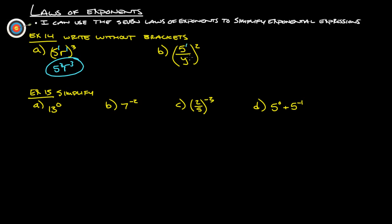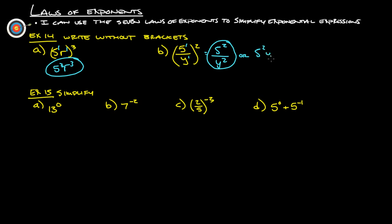Same thing here, that's a 1 and that's a 1. That is going to be 5 — 1 times 2 is 2, and 1 times 2 is 2 — so 5 squared over y squared. Or, depending on how they ask, you could write it as 5 squared, y to the negative 2nd.